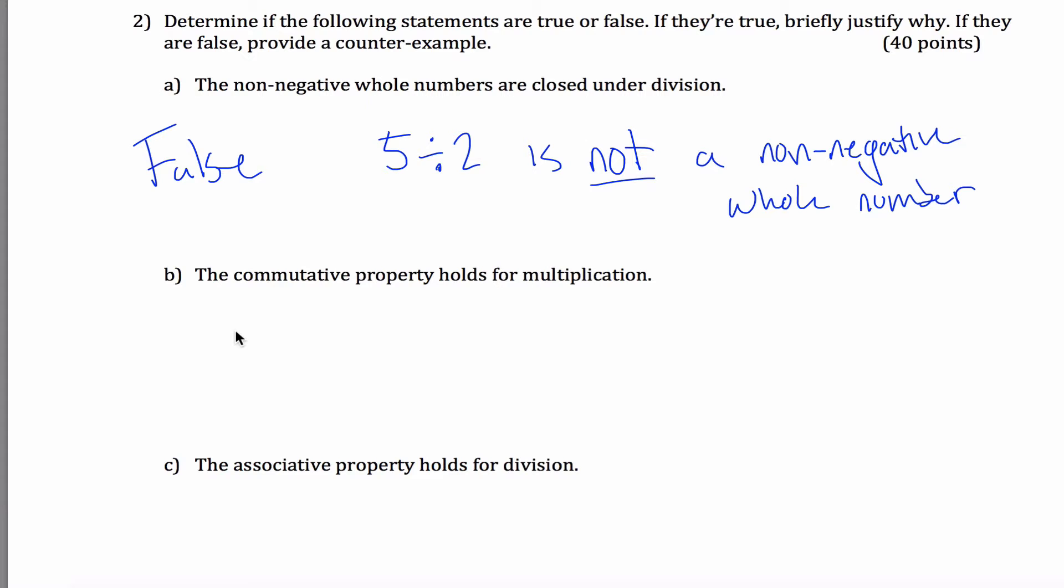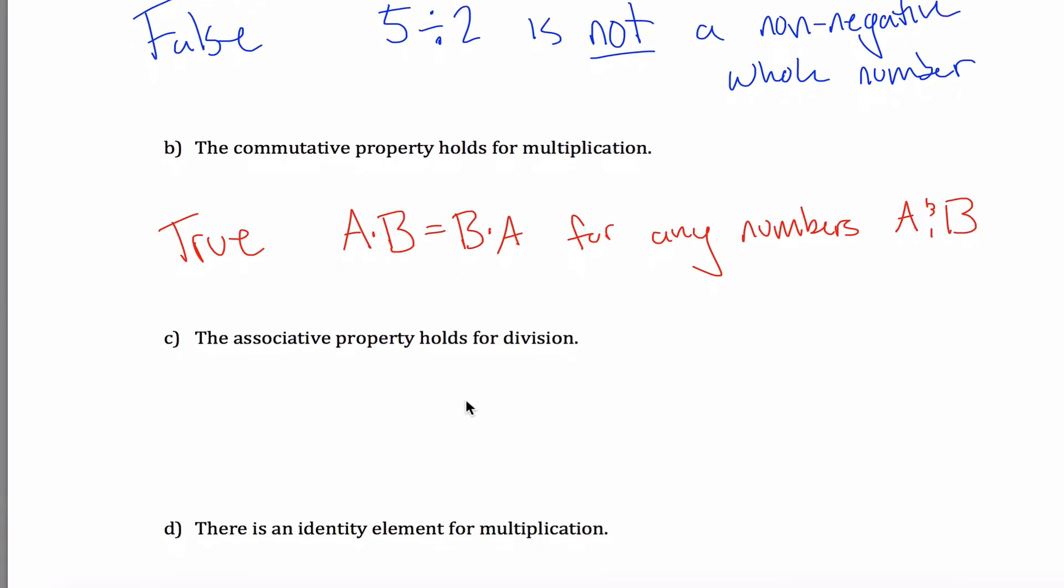The commutative property holds for multiplication, sure does. I don't know, A times B equals B times A. For any numbers A and B, multiplying the order changes or any numbers A and B. Something to that effect, commutative property does hold for multiplication.